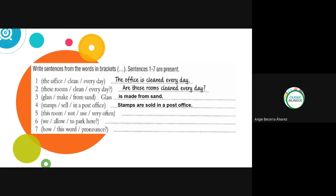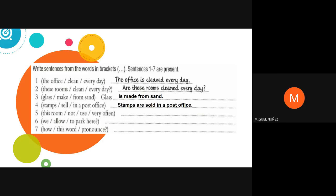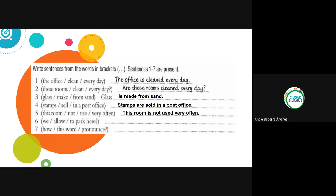Number five: 'This room not used very often.' In this case we have a negation, so the sentence is negative. Answer: 'This room is not used very often' — or 'isn't used very often.' Very good.